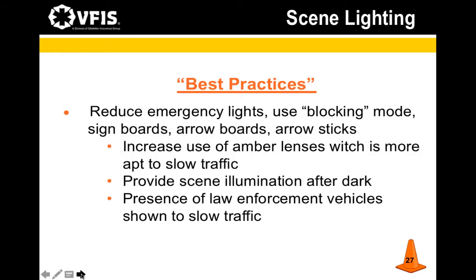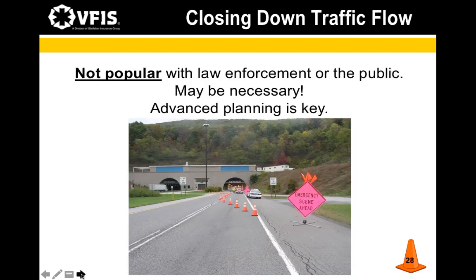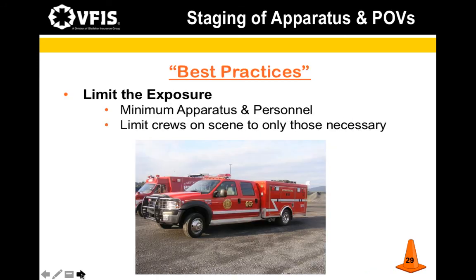Best practice notes include using proper blocking with arrow signs and increasing the use of amber lighting, as it seems more likely to slow traffic. Provide sufficient scene illumination for responders. Using law enforcement vehicles can also help slow traffic, as drivers often slow reflexively at police lights. Although closing traffic altogether is not ideal, sometimes it is necessary — having alternative traffic routes in mind and working with other agencies ensures a quick detour and safe scene clearance. Limiting the scene to the minimum responders and vehicles reduces congestion and confusion.